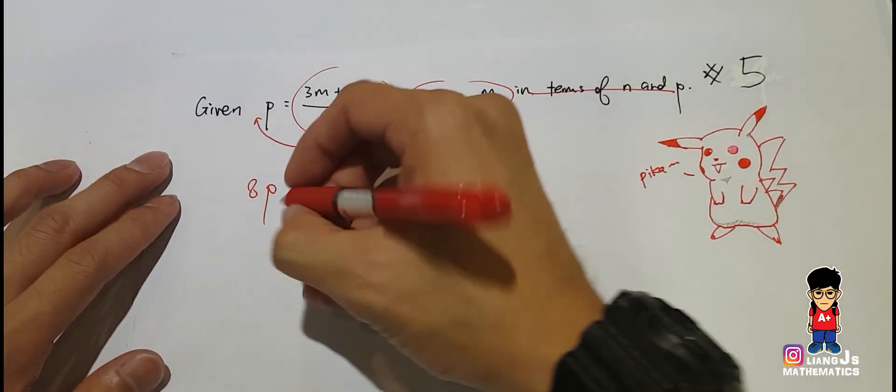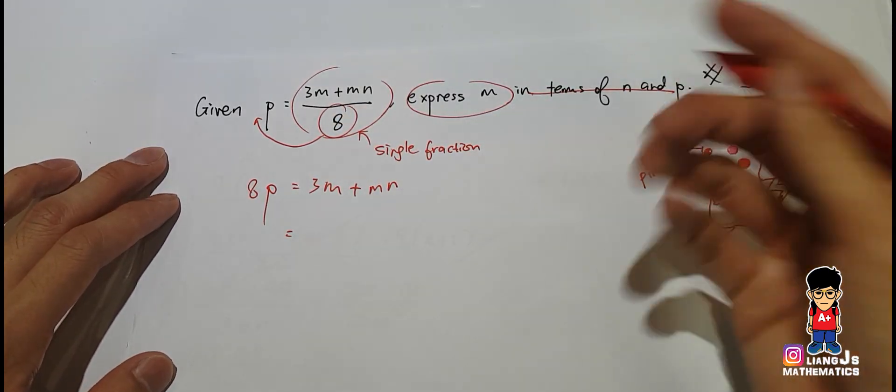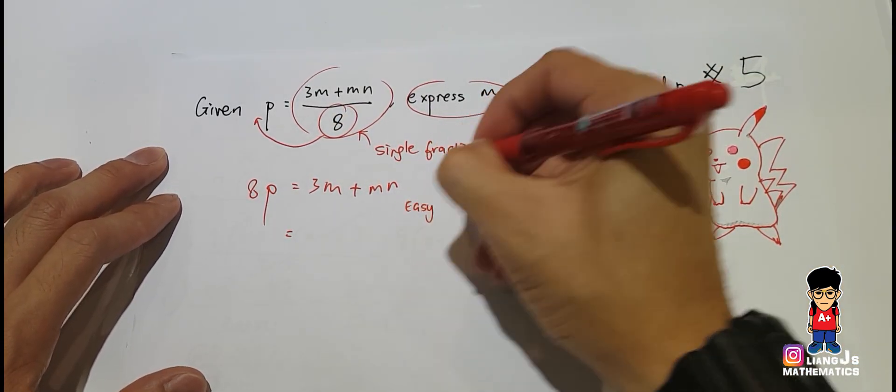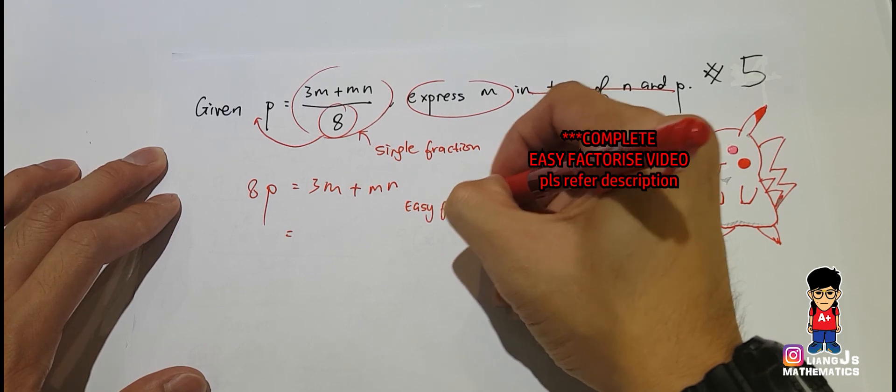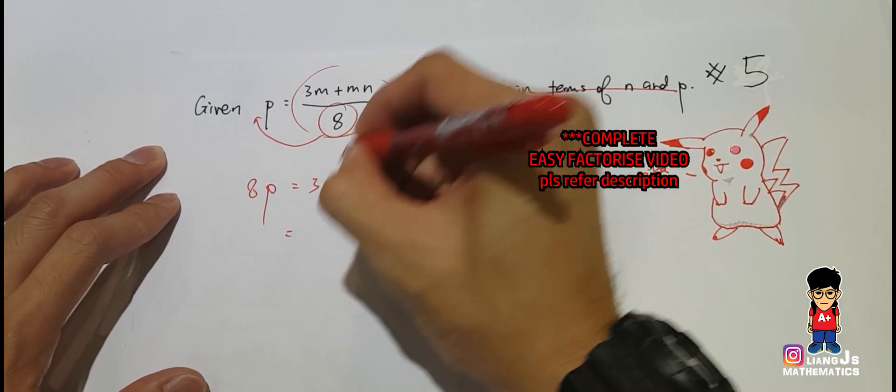What we have to do is apply the so-called easy factorization, where we can pull out the m.